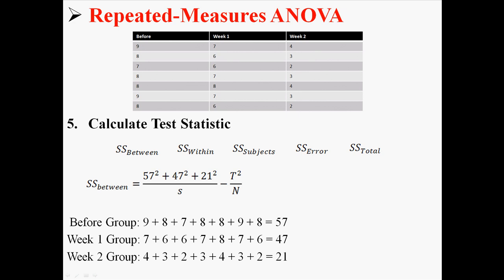Now the t in this equation is referring to the total sum of all the scores. We have to add together all the scores, add together 57, 47, and 21, or add together all the individual scores, and we get 125. And we already know S and capital N because we found them before. They're just 21 and 7. So now we have everything we need to calculate sum of squares between, which in this case is 98.67.